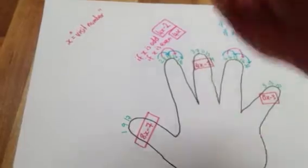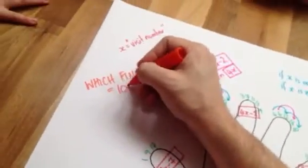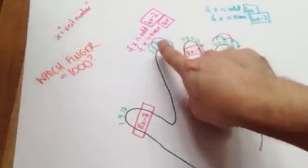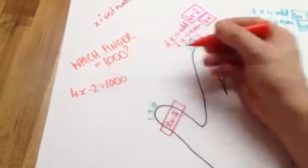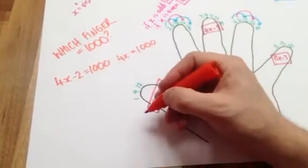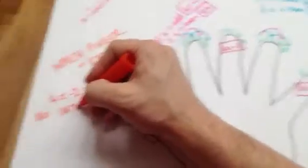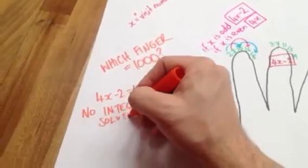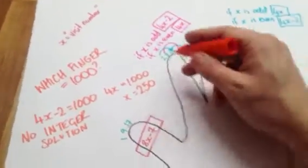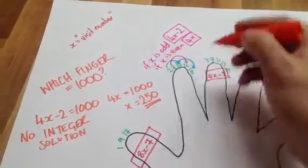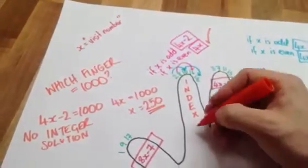So how do we solve Jason's problem? Which finger is going to give us 1,000? Because it's even, it's either going to be in this one or this one. And all I have to do is solve 4X minus 2 equals 1,000 and 4X equals 1,000. Now this one here doesn't give me an integer solution, but this one does. It tells me that the 250th time I visit a finger, I'm going to get the number 1,000. But 250 is even, so that means we're going to be on this finger here. So the answer to Jason's problem is that the 250th time I visit the index finger, I'll be counting the number 1,000.